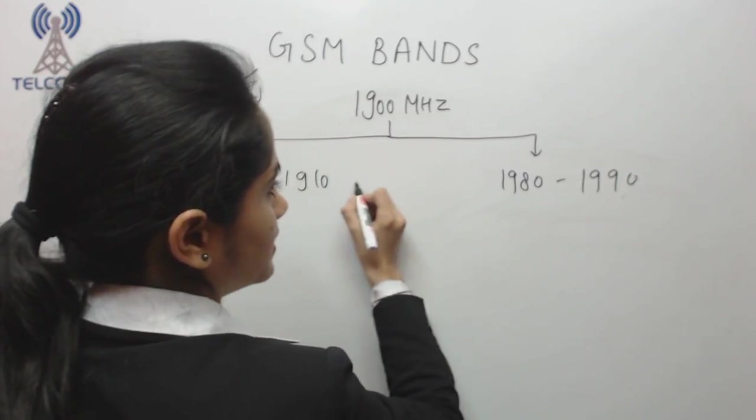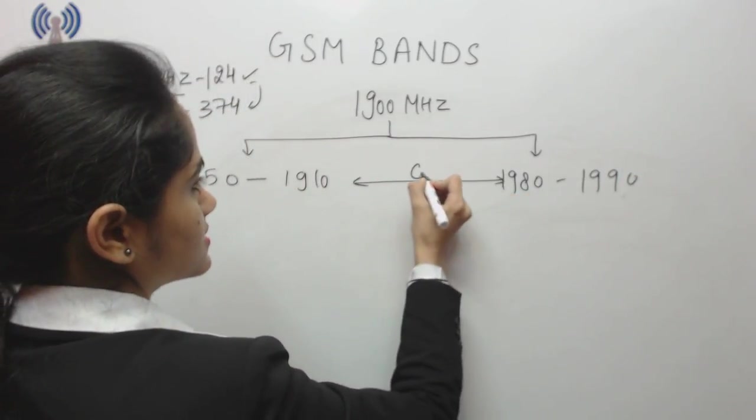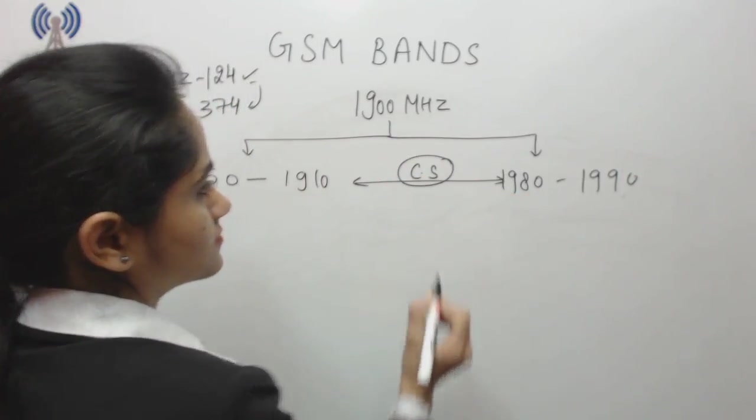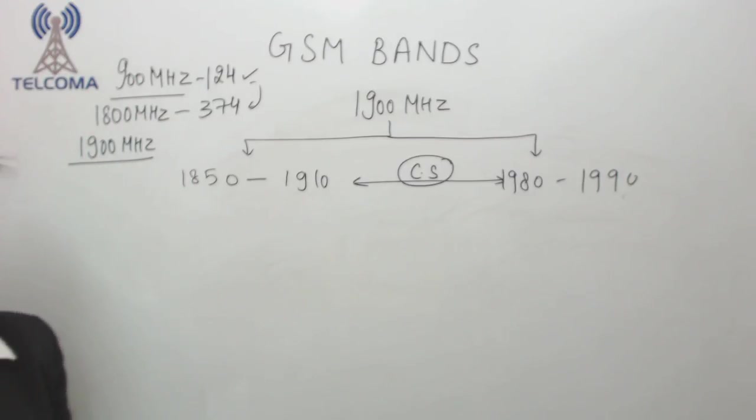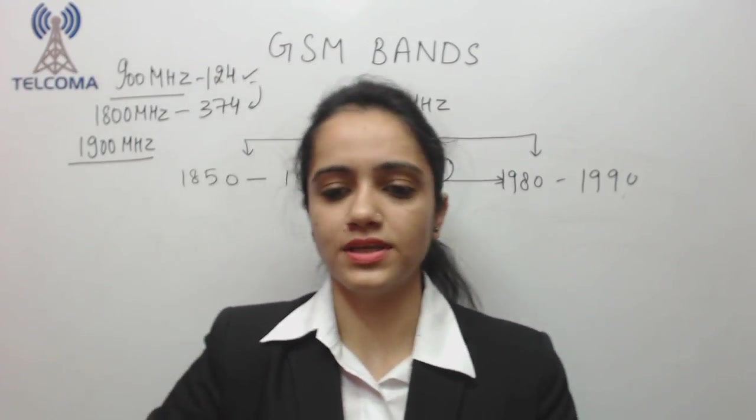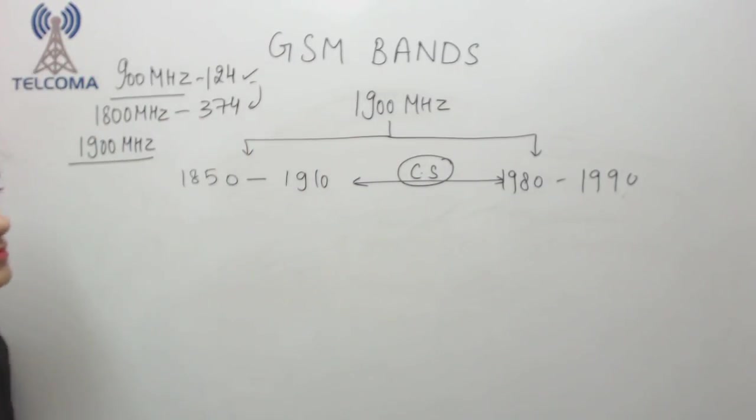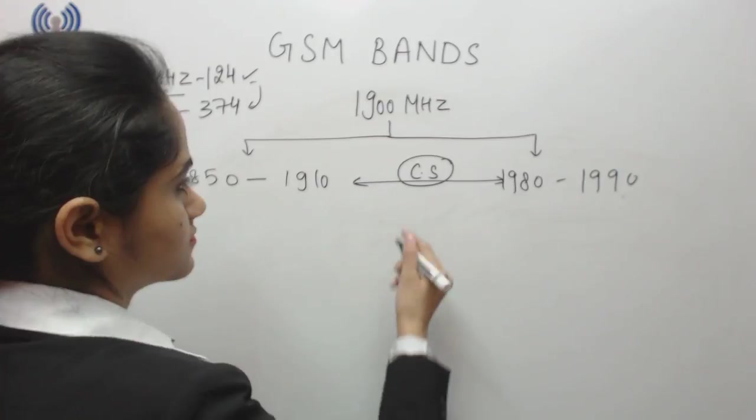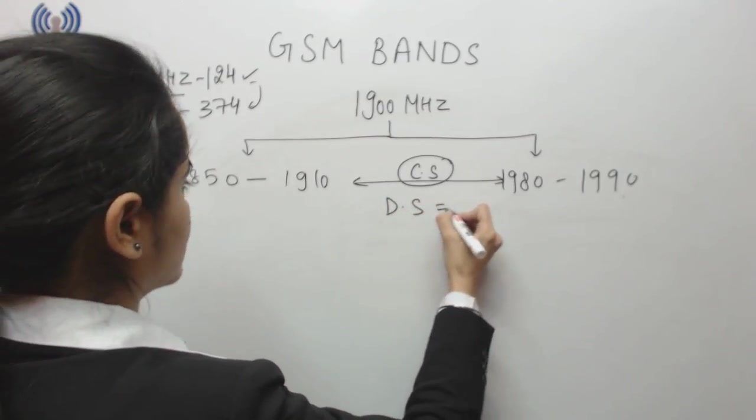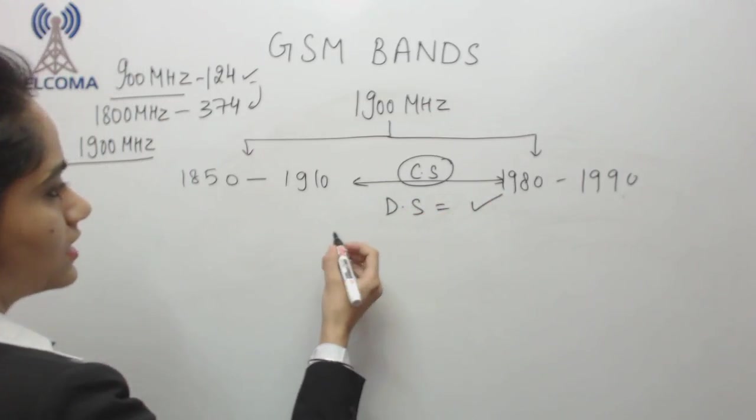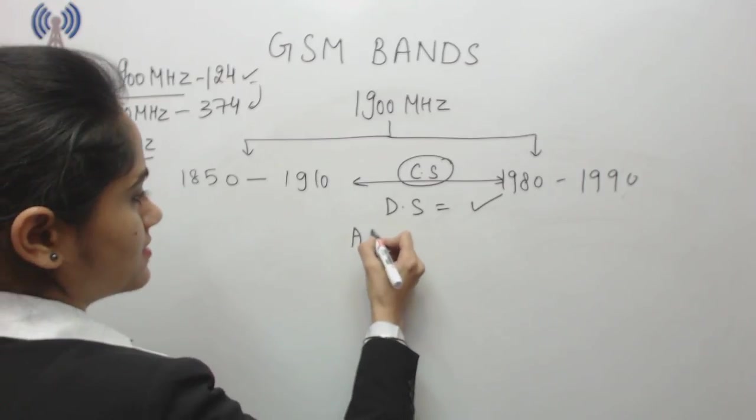Similarly we can see the channel spacing is the same as 20 megahertz. We can calculate duplex spacing the same way, and then we have ARFCN.